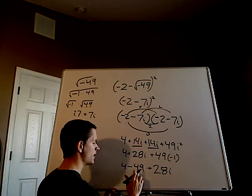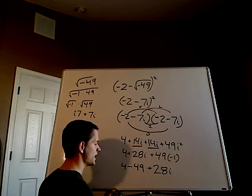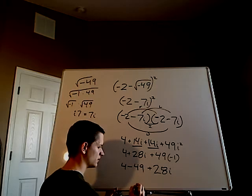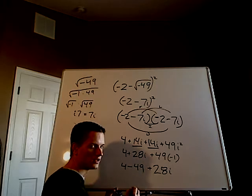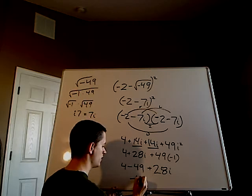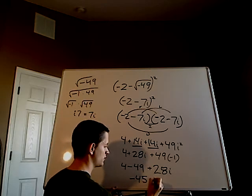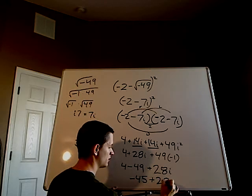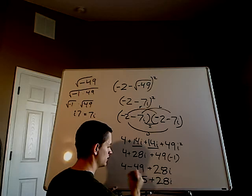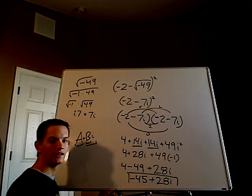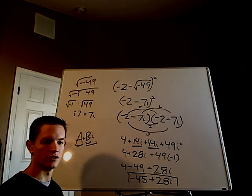4 minus 49 gives me negative 45, plus 28i. And that's it — that is your final answer.